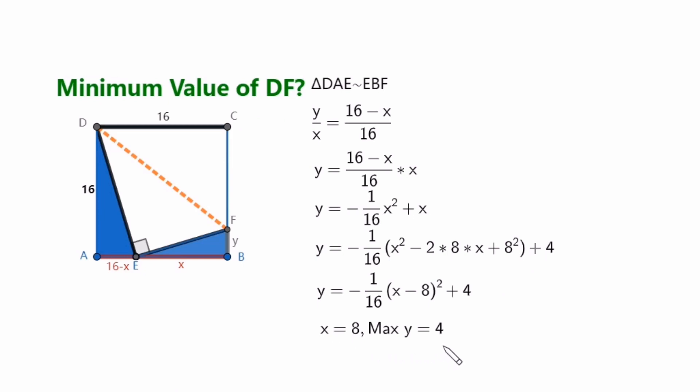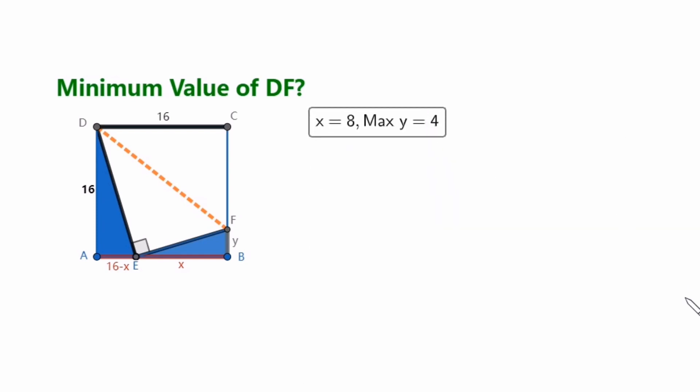After we get maximum value Y is 4. Let's go ahead and complete the following steps. If Y is equal to 4, so CF is equal to 16 minus Y, so the minimum value of CF is 16 minus 4 is 12. In right triangle DCF, we use the Pythagorean theorem. It's easy to figure out what DF value is. DF squared is equal to 16 squared plus 12 squared. That's equal to 400. And then we have the final answer. The minimum value of DF is 20 units.